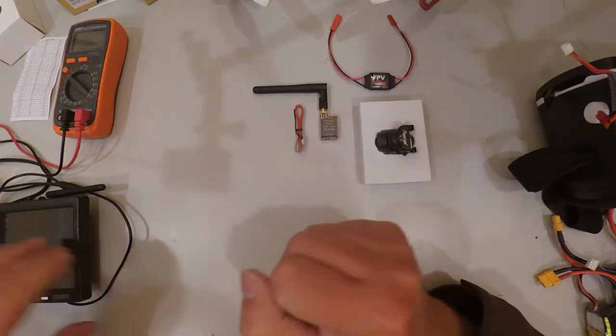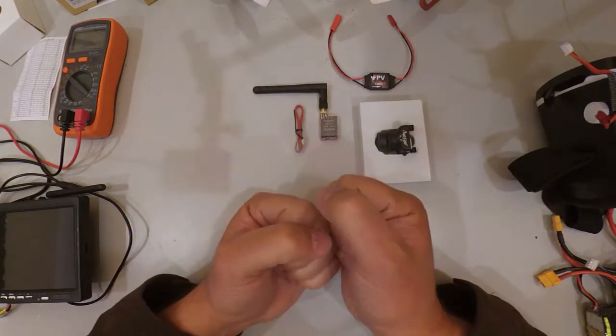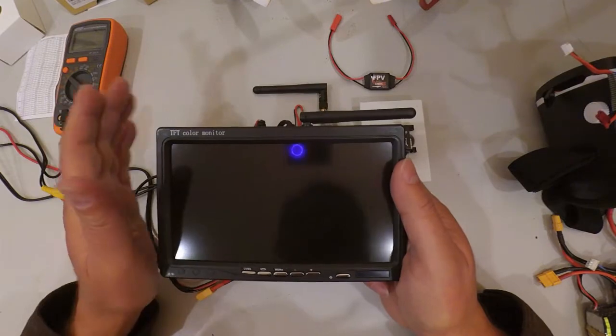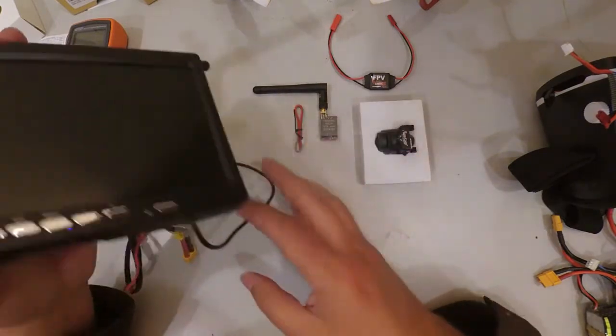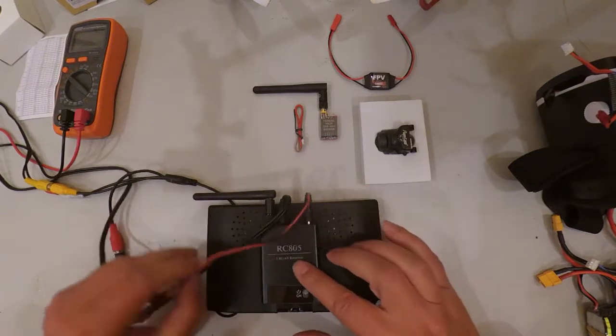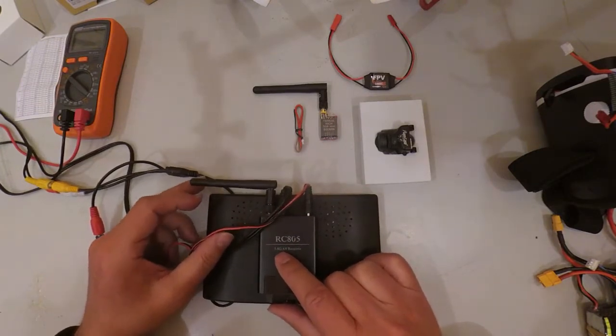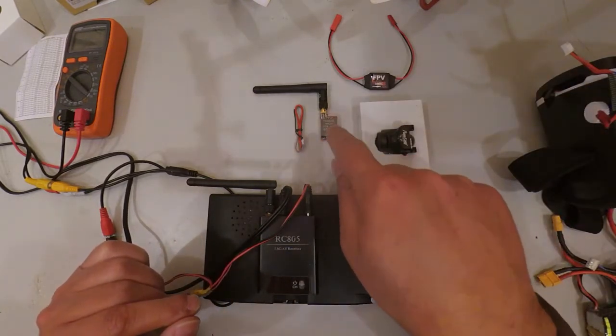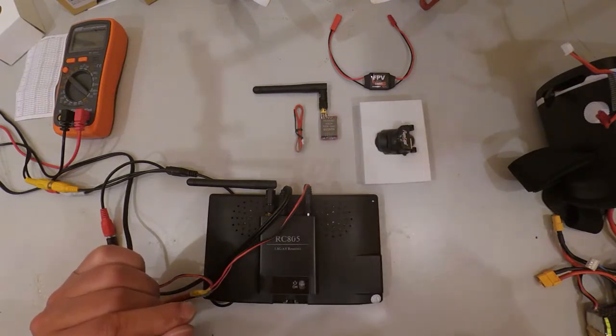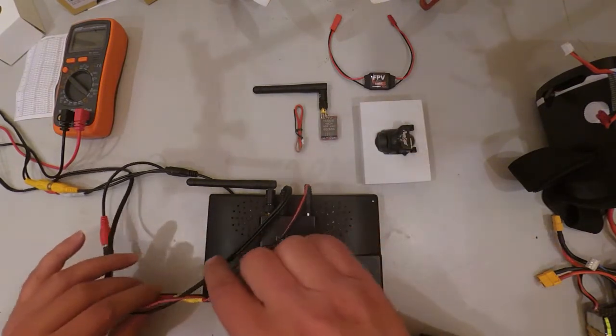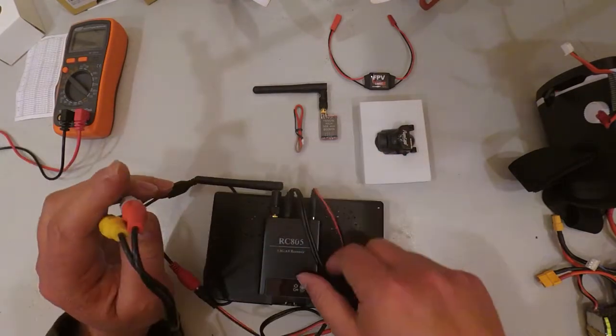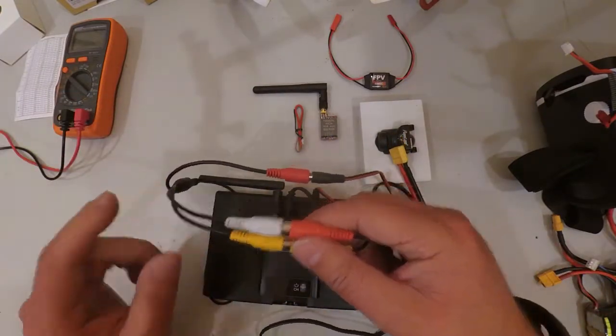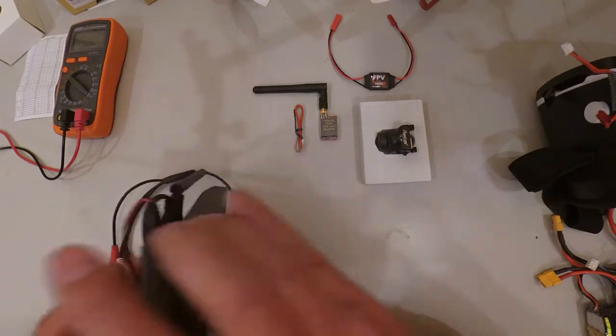The next thing you need is something to receive the signal and display it. Here I have a very cheap little TFT monitor which has all the required cables. On the back I have a receiver, a very cheap 8-channel receiver. The receiver has power and the wires output to the screen.